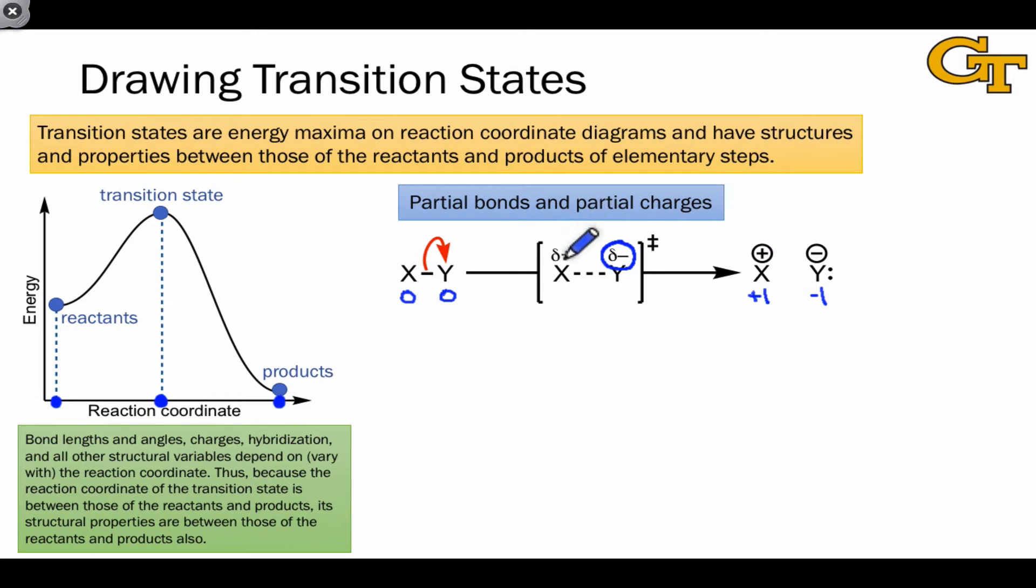Likewise, since X goes from neutral to plus 1, at the transition state it will have some charge between 0 and plus 1, some partial positive decimal value that we represent using delta plus.